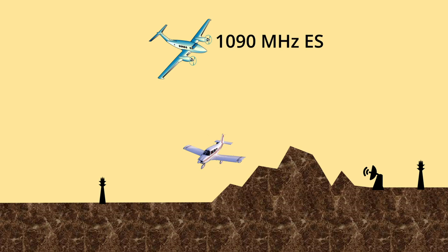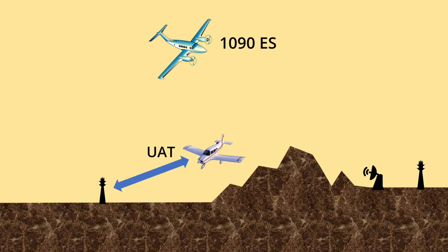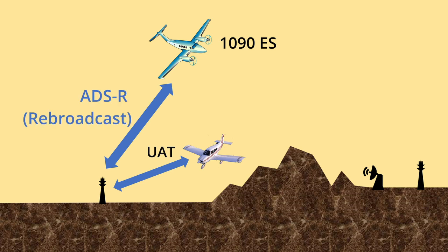Sometimes aircraft will have different systems installed and normally would not be able to share their positions with each other. However, a UAT-equipped aircraft can broadcast its position to ground towers. The ground towers, in turn, using ADS-R, or the rebroadcast system, will rebroadcast that information to other aircraft on both systems.